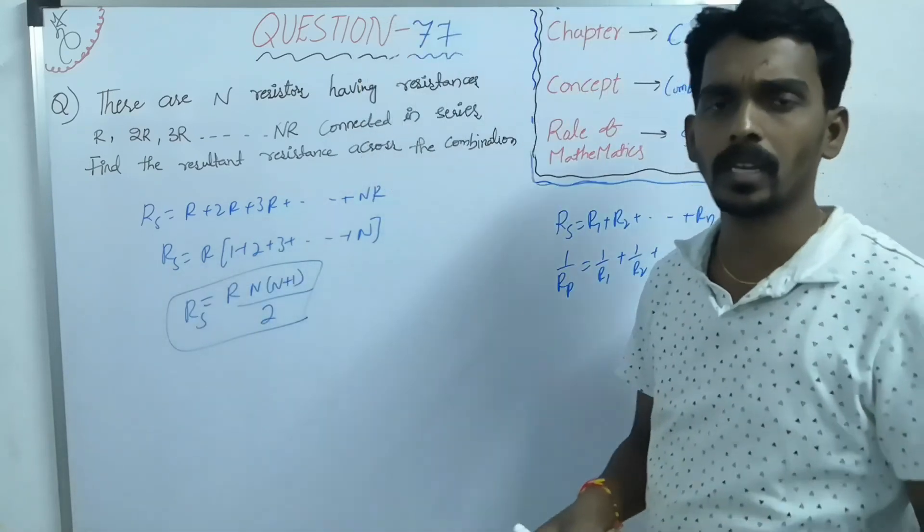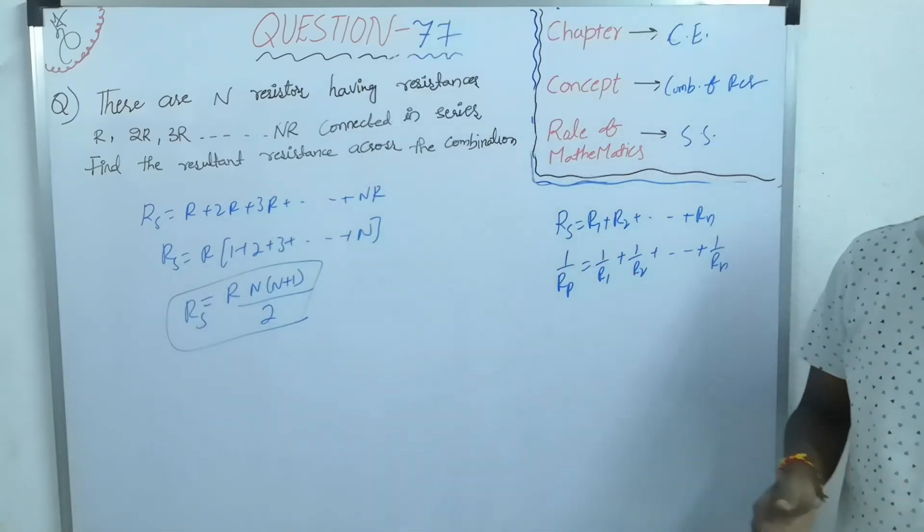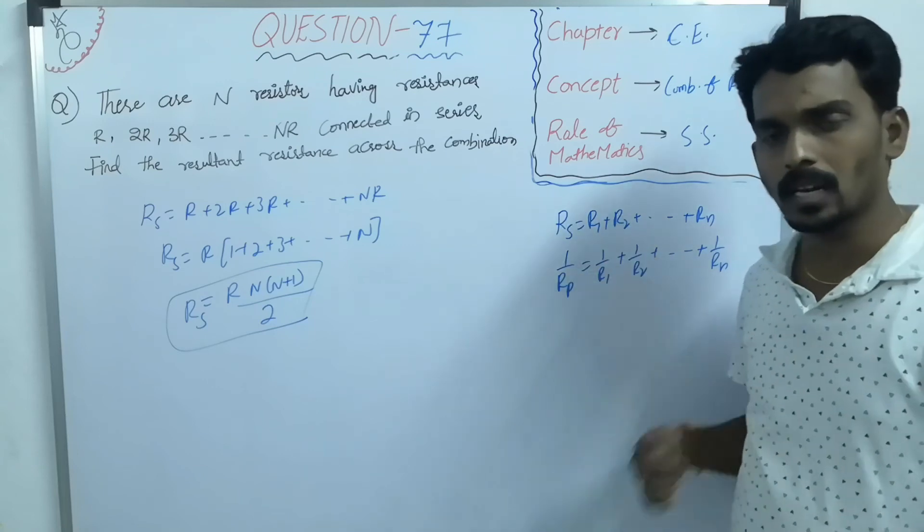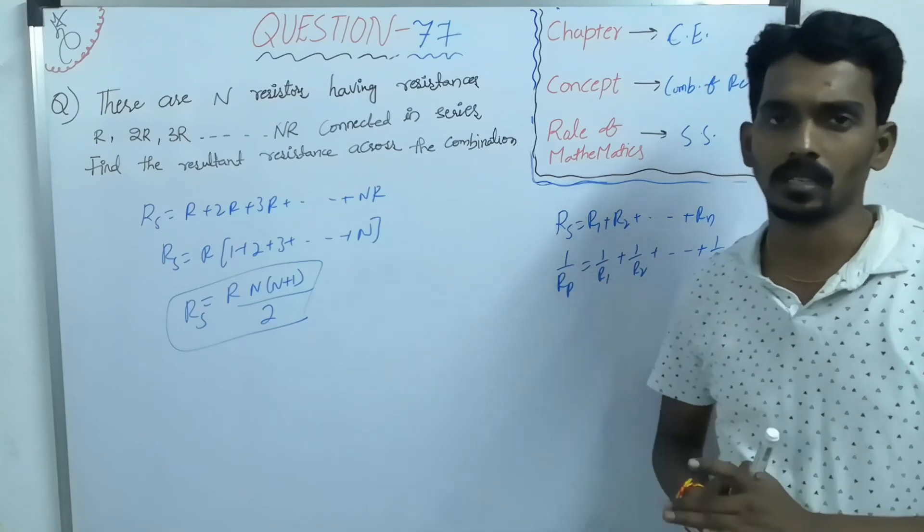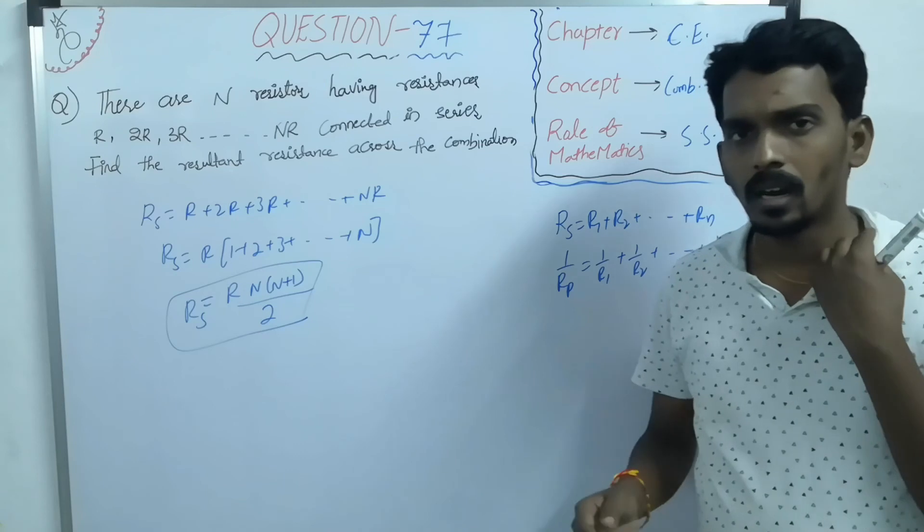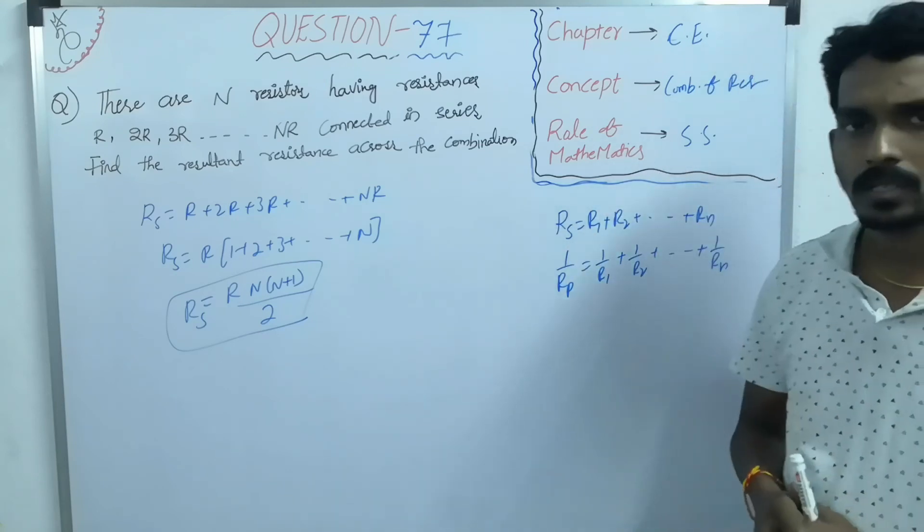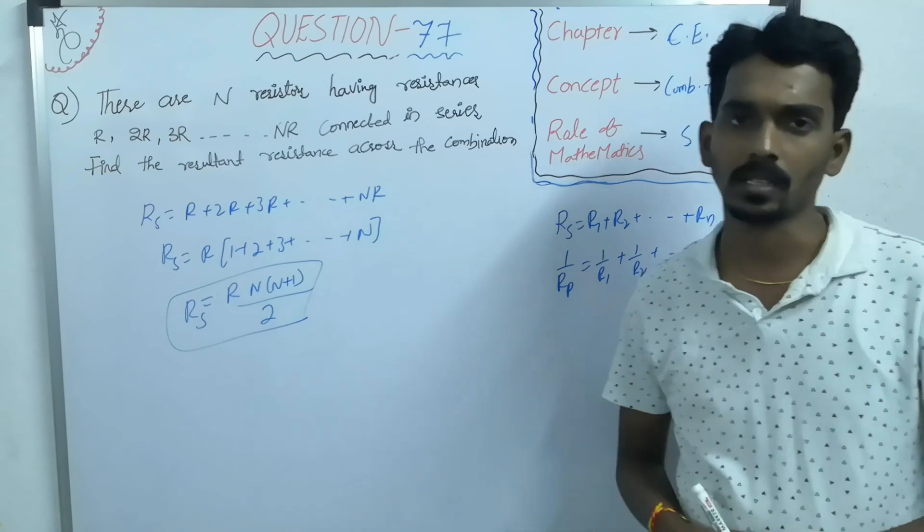One simple question just to make you understand the concept of what is the series and parallel combination of resistors and how can we use the concept of sum of natural numbers in this concept.